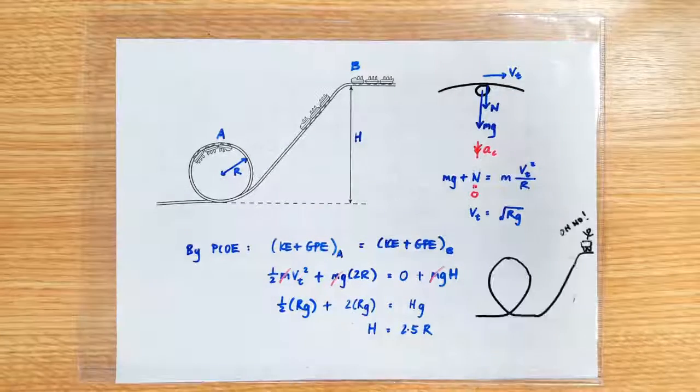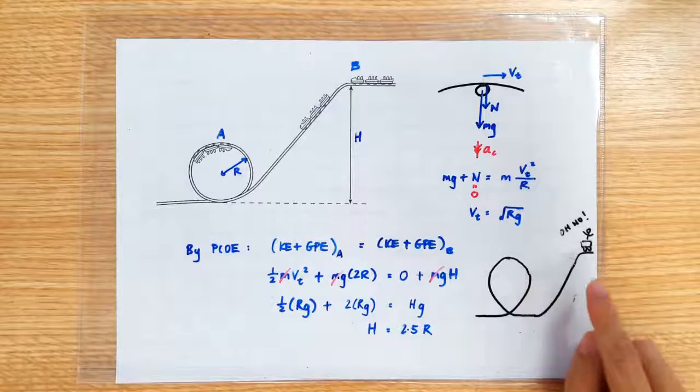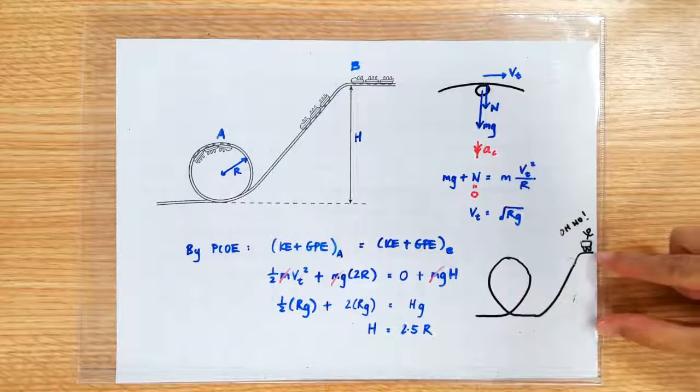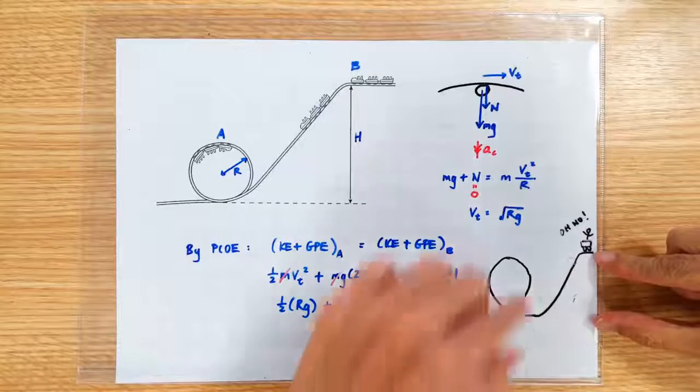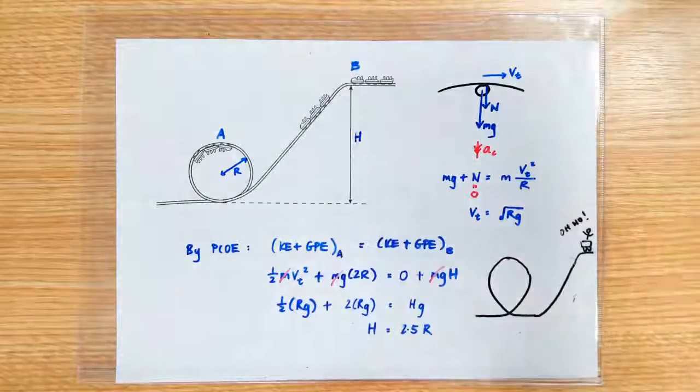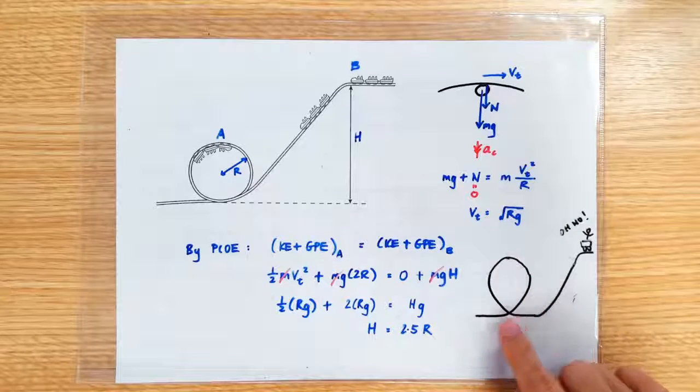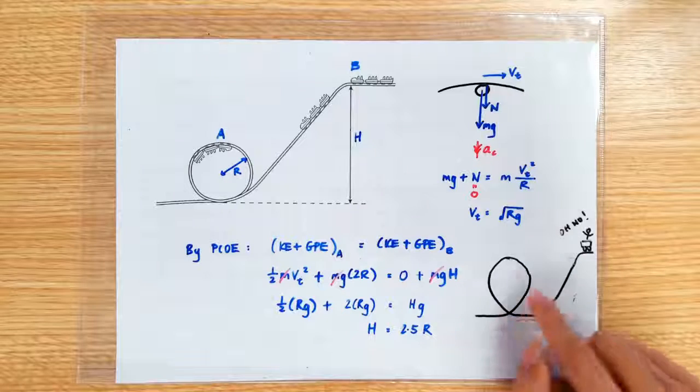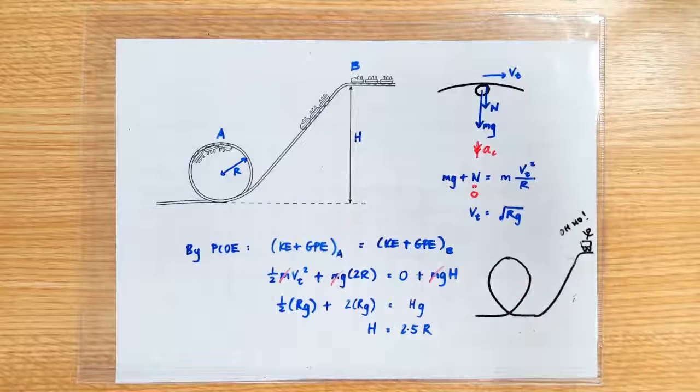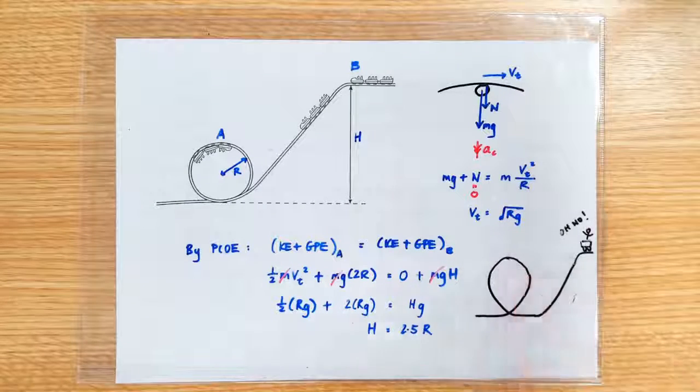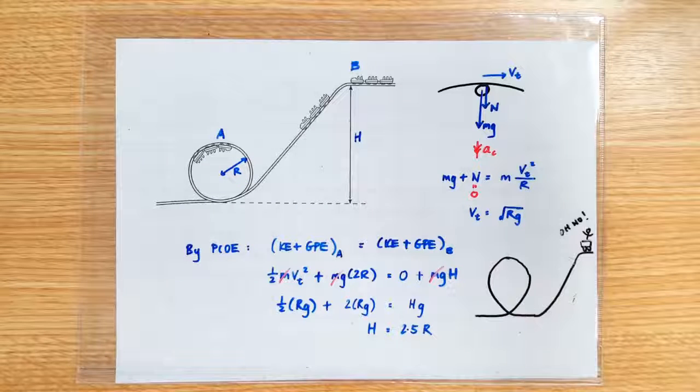But if you go on a roller coaster ride and you see that the height doesn't look like it's 2.5 times the radius, don't panic. Usually it's because the ramp is not a circular one, it comes in a teardrop shape which allows you to do the loop with a lower speed at the top.